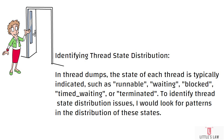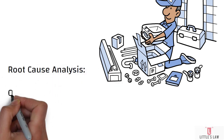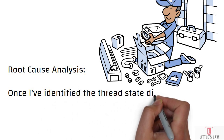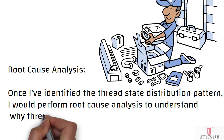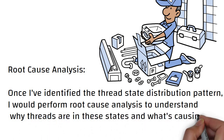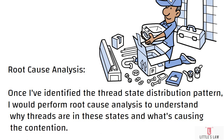The second and critical part is the root cause analysis. Once you have identified the thread state distribution — threads in the waiting state or frequently transitioning between runnable and blocked — you perform a root cause analysis to understand why threads are in these states and what is causing the contention. This involves examining the call stack of threads in the waiting or blocked state to identify specific code paths or synchronization points causing the delays. Additionally, correlating thread state distribution with other performance metrics such as CPU utilization or database activity provides further insights into the underlying issues.